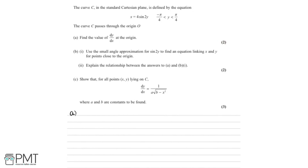We've got x equals 4 sine 2y. The first thing to notice is we've got x as the subject here instead of y. So what we're going to do, instead of finding dy by dx, we're going to find dx by dy — we're going to differentiate everything with respect to y.